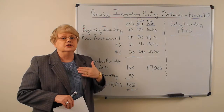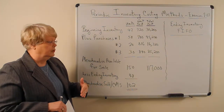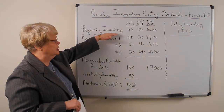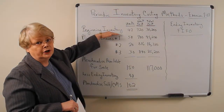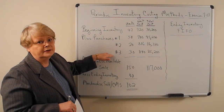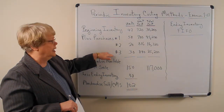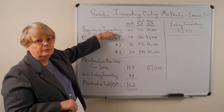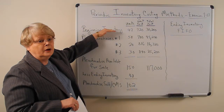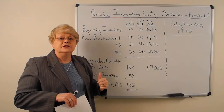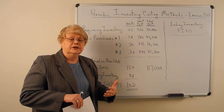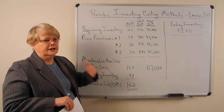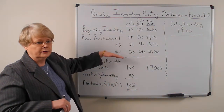If the problem asks you to value ending inventory under a periodic system, you are going to be looking at the bottom because these items are gone. Occasionally, you'll get a problem that asks you to value cost of merchandise sold under FIFO, and if that's the case you would look at the top because these are the items that are sold. But most problems will say, what is the ending inventory? Because it's easier to count the physical inventory, get the number of units, come up with the value, and then calculate the cost of merchandise sold.